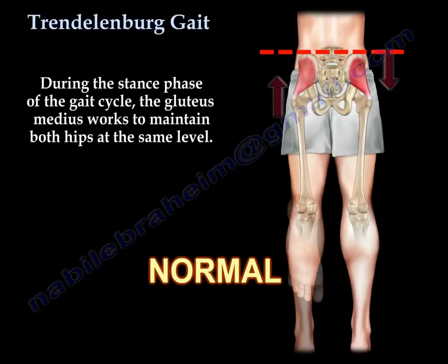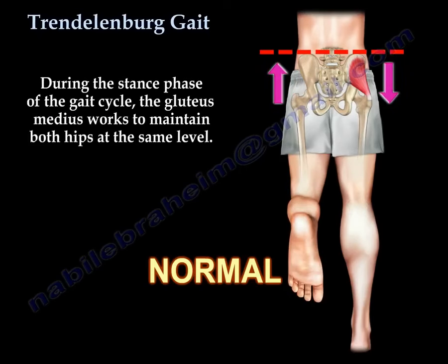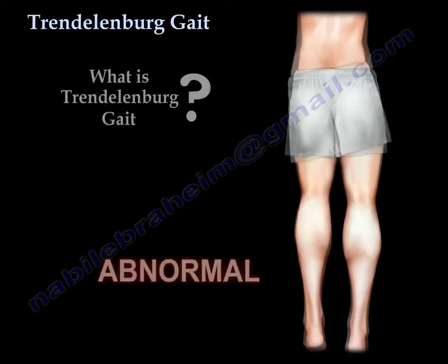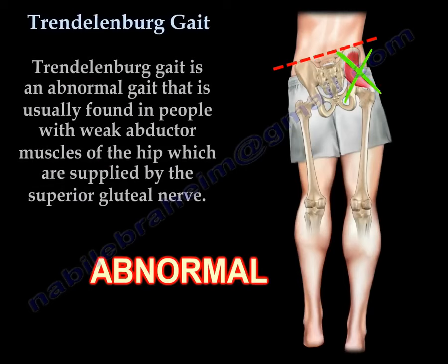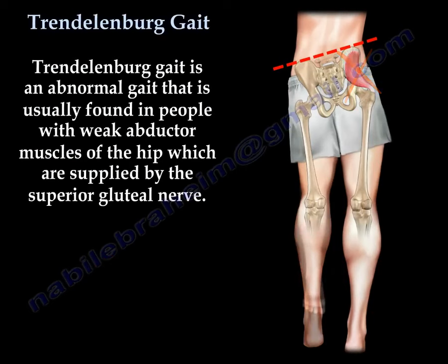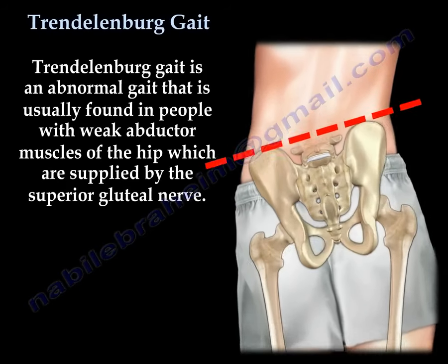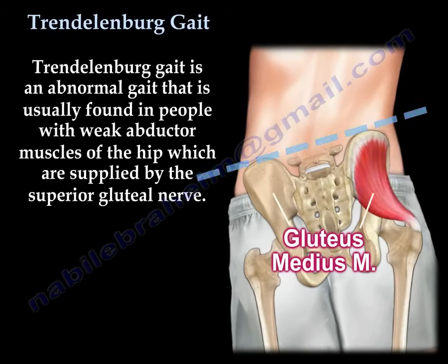During the stance phase of the gait cycle, the gluteus medius works to maintain both hips at the same level. Trendelenburg gait is an abnormal gait that is usually found in people with weak abductor muscles of the hip, which are supplied by the superior gluteal nerve.